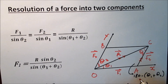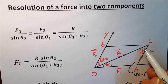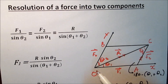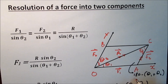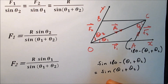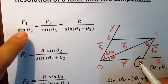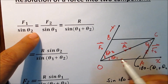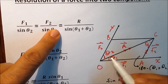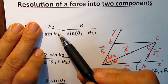The measure of angle A equals 180 minus (theta1 plus theta2). To find F1 and F2, we can use the sine rule studied before in trigonometry. So R over sine of angle A equals F1 over sine of theta2, equals F2 over sine of theta1. Sine of angle A equals sine of (180 minus (theta1 plus theta2)), which equals sine of (theta1 plus theta2).